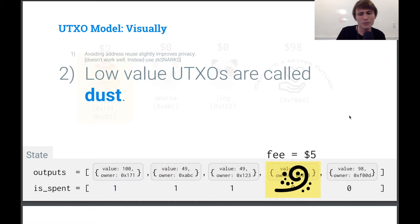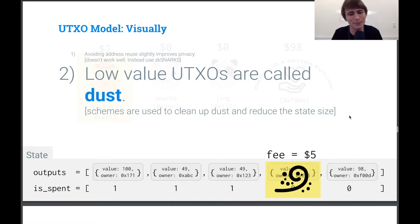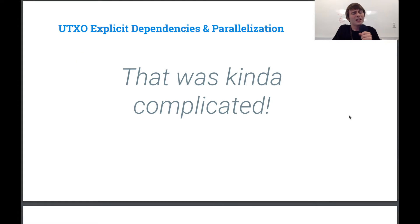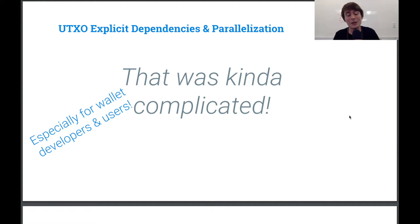And it's kind of annoying because it bloats our state and it can't actually be spent without someone actually losing money. So it's a kind of tragedy of the commons type deal. So schemes are often used to clean up dust and reduce the state size. But, you know, you have to implement those yourself. So it was a little bit complicated. And this is especially complicated for wallet developers and users because you have this big UTXO set. You have to read that and then figure out what your state object is.